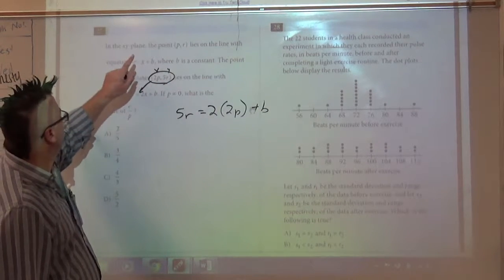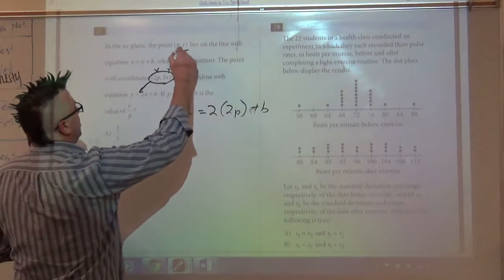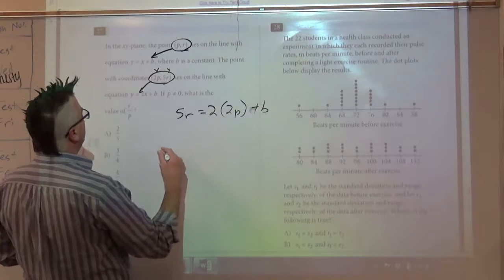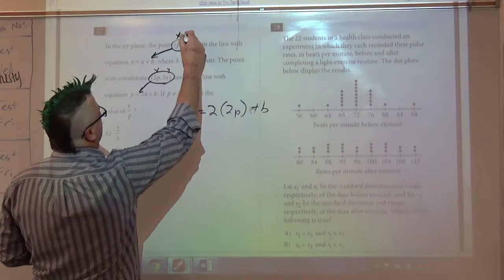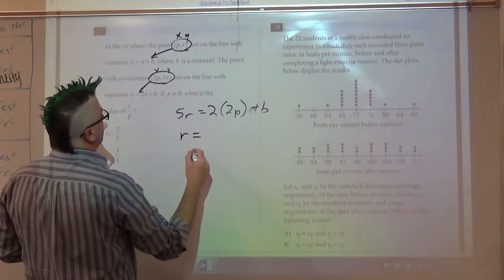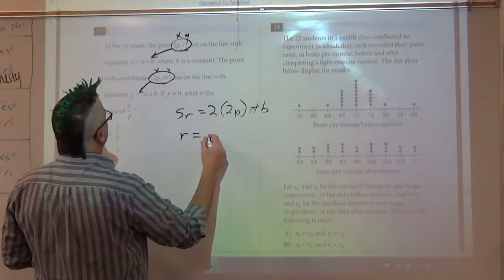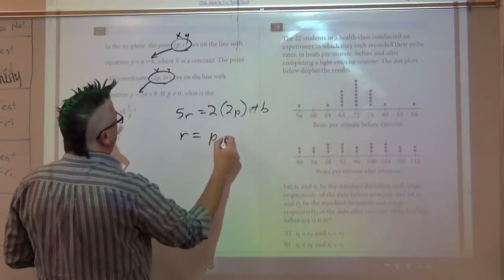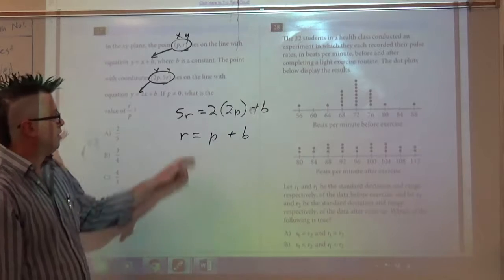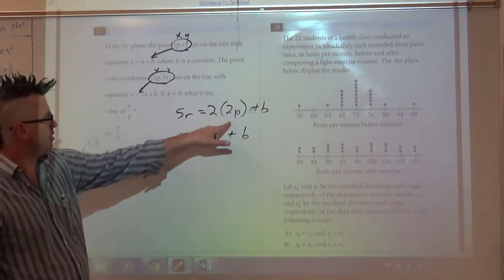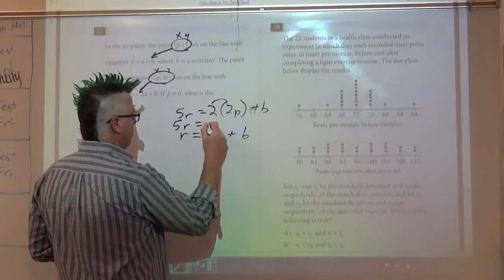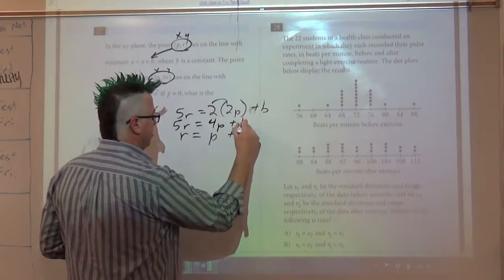It's kind of ugly. I put the 2P where the x was, I put the 5R where the y was. Now this part tells me that at this point, it's on that equation. So I'm going to put the P where the x is and I'm going to put the R where the y is. So R equals P plus B. Now this top equation, I need to clean this up a little bit. I can distribute, so I have 5R equals 4P plus B.